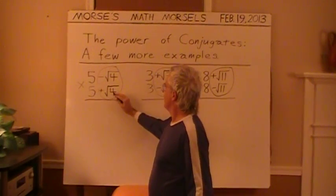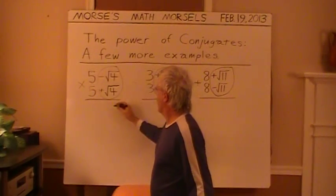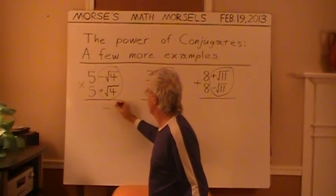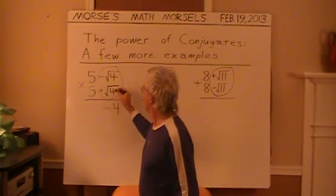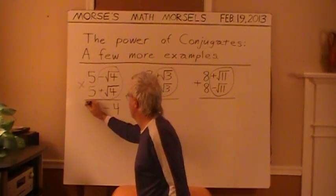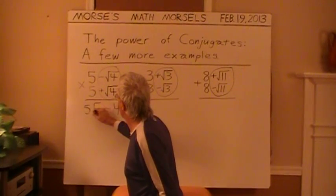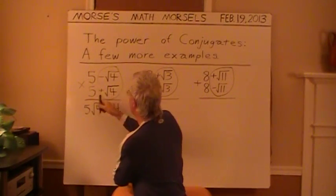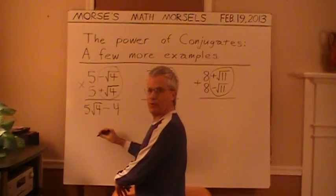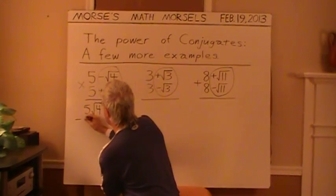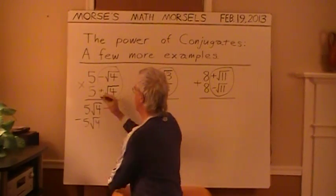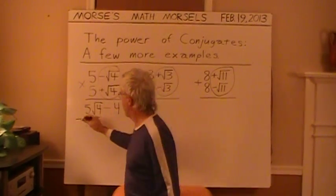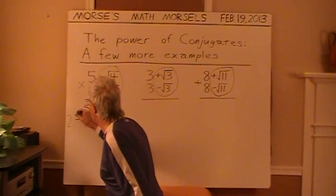So multiplying, square root of 4 times negative square root of 4 will be just minus 4. And square root of 4 times 5, 5 times the square root of 4. 5 times the negative square root of 4. And finally, the 5 times 5, which is 25 way over here.